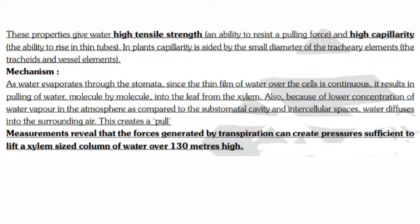Mechanism: As water evaporates through the stomata, since the thin film of water over the cells is continuous, it results in pulling of water molecule by molecule into the leaf from the xylem. Also, because of the lower concentration of water vapor in the atmosphere compared to the substomatal cavity and intercellular spaces, water diffuses into the surrounding air. This creates a pull which is a negative hydrostatic pressure.